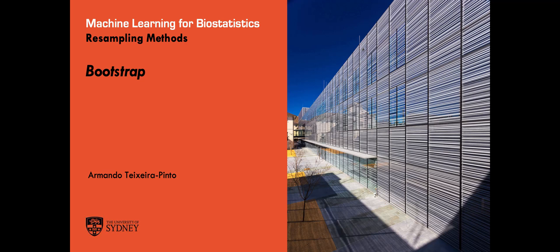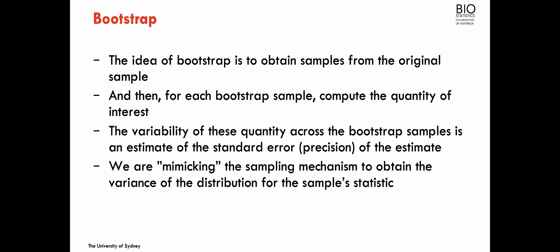We are going to talk about bootstrap, one of the two resampling methods we'll see in this module. Bootstrapping was proposed by Efron in 1979, and the main idea is to obtain multiple samples from the original sample. From these samples, we compute statistics of interest in each one, and the variability of this statistic across all the bootstrapped samples is an estimate of the standard error of the parameter we're looking at.